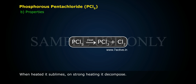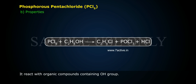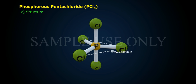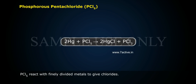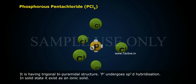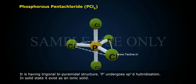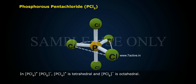When heated, PCl5 sublimes; on strong heating, it decomposes. It reacts with organic compounds containing OH (hydroxy) groups. PCl5 also reacts with finely divided metals to give chlorides. Structure: It has a trigonal bipyramidal structure, and P undergoes SP3d hybridization. In the solid state, it exists as an ionic solid, [PCl4]+ and [PCl6]−, where PCl4+ is tetrahedral and PCl6− is octahedral.